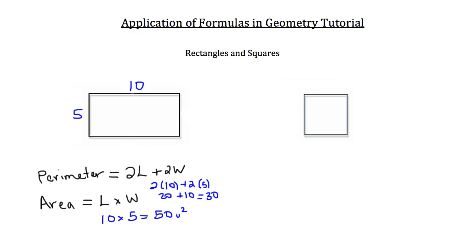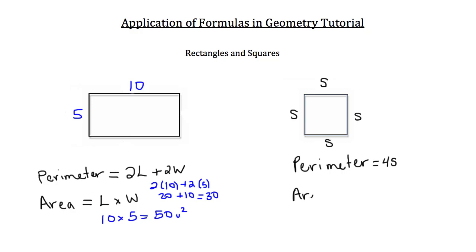Now let's look at the formulas for perimeter and area of a square. To calculate the perimeter of a square, take the length of one side and multiply by 4, because a square has four congruent sides, each with length s. To calculate the area of a square, multiply one side by the other — since all sides are congruent it's simply side squared, s times s.